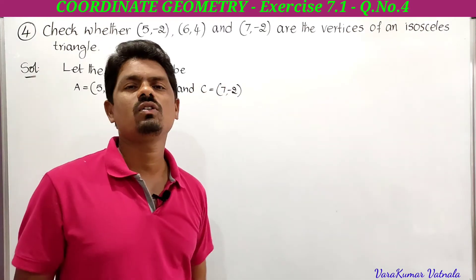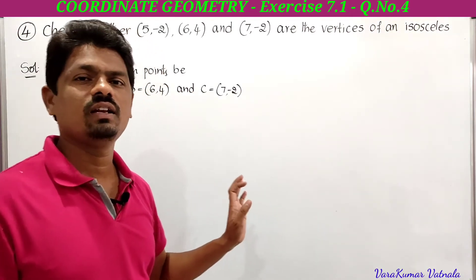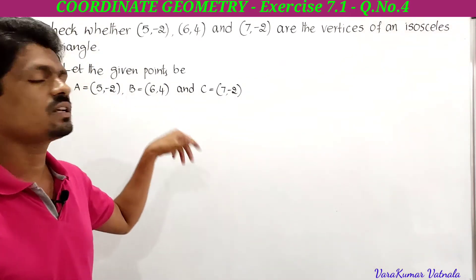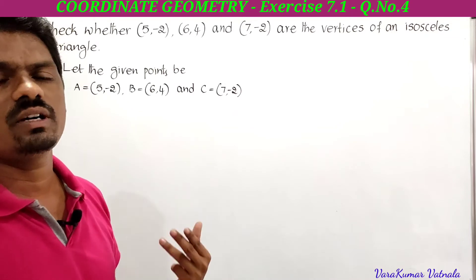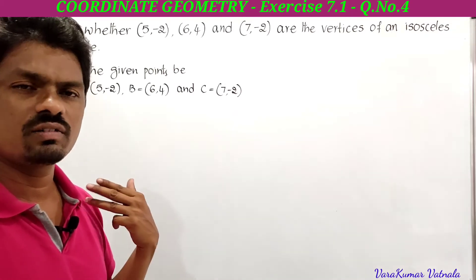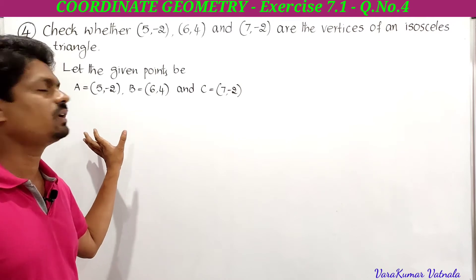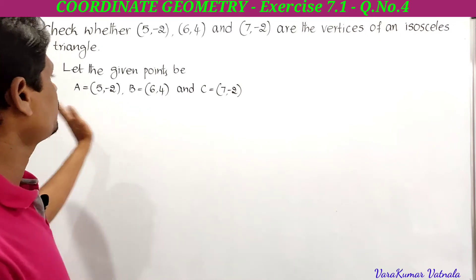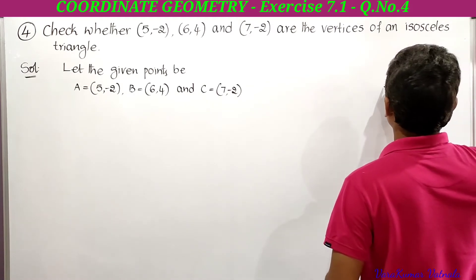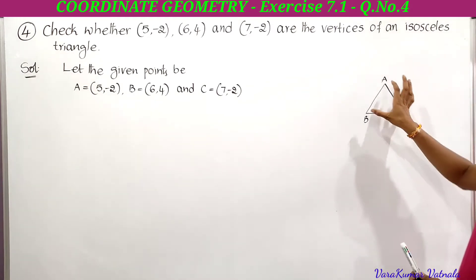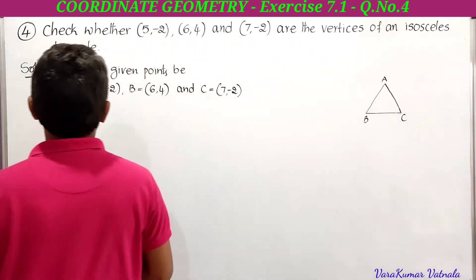Let A = (5, −2), B = (6, 4), and C = (7, −2). If these are the vertices of an isosceles triangle, then any two of the three side lengths AB, BC, or CA must be equal. We need to find all three distances using the distance formula.